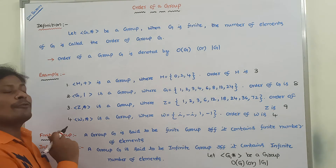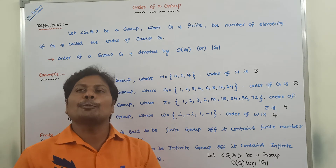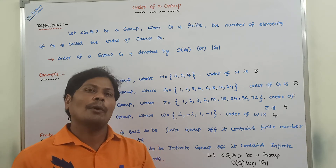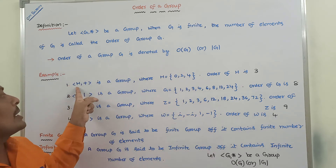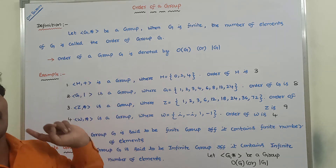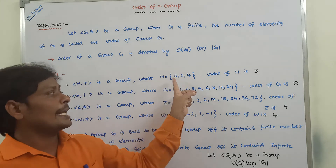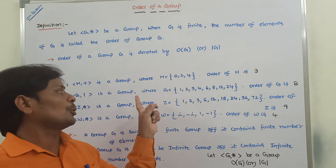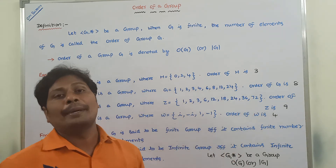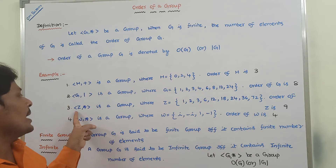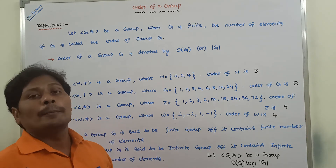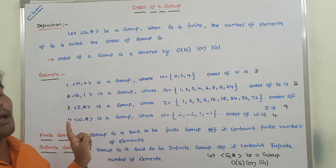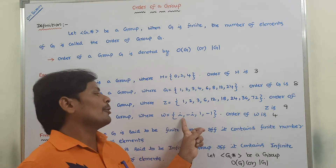What is a finite group? A group is said to be a finite group if and only if it contains a finite number of elements. For example, (H, +) is called a finite group because it contains only 3 elements. (G, divisibility relation) is a group where G contains 8 elements. (Z, *) is a finite group because Z contains 9 elements. (W, *) is a finite group — it contains only 4 elements.